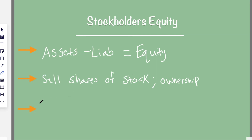Knowing about equity — sometimes they call it net assets, because it's what's left over after you subtract all the liabilities. Liabilities are claims against your assets, so after you subtract them out, it equals something called net assets. They usually use that term more in governmental accounting.